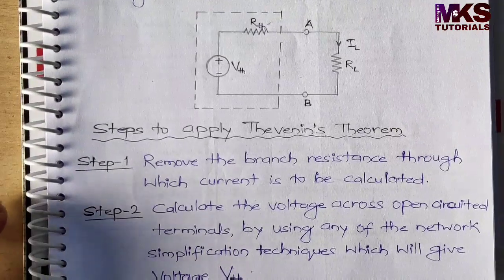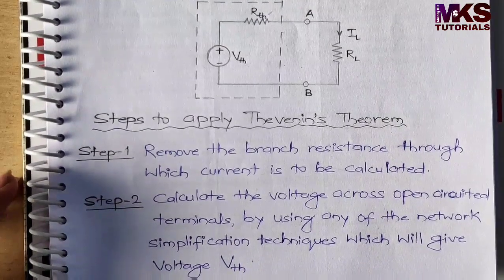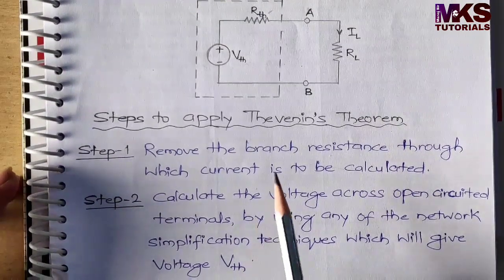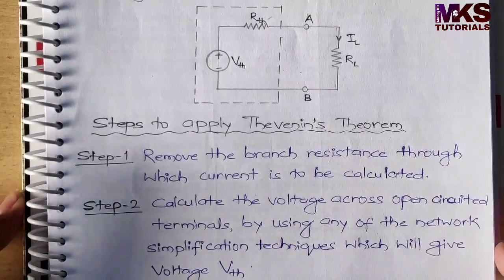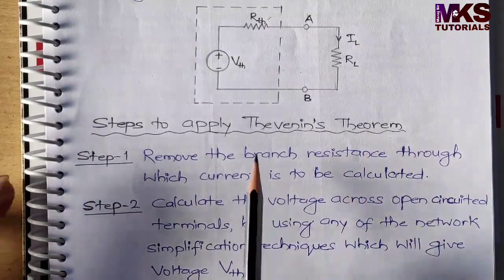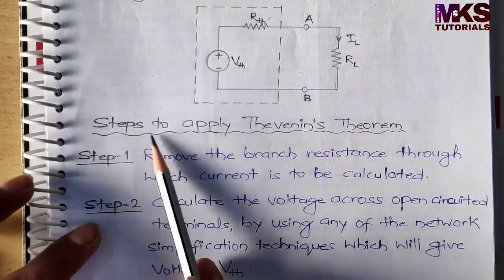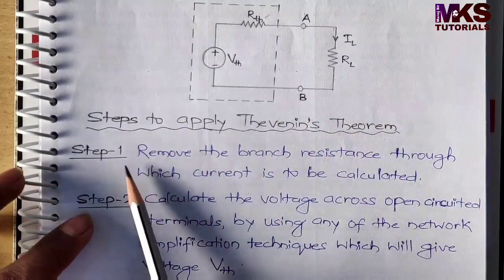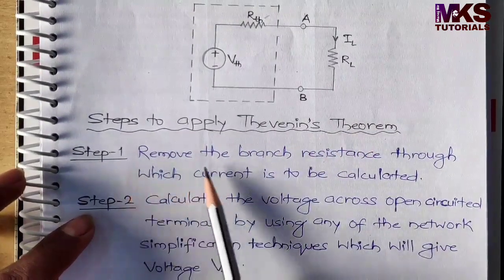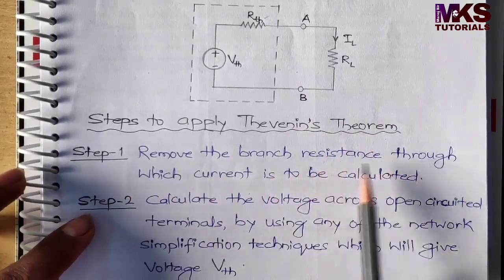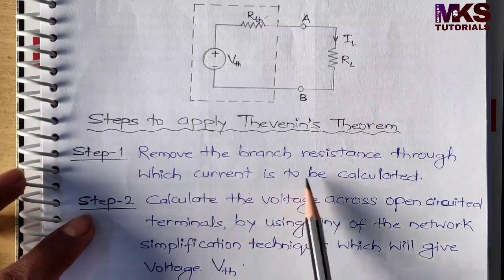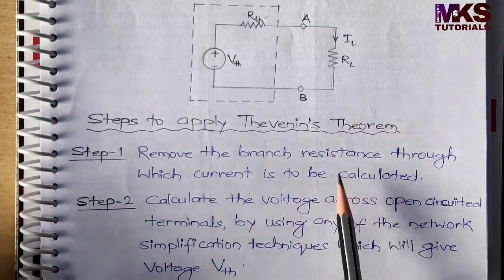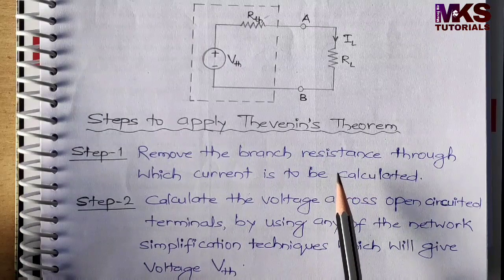इसको solve करने के steps देख लेते हैं। Steps to apply Thevenin's theorem: Step 1 — Remove the branch resistance through which current is to be calculated. हमको जिस branch के across current निकालना है उसको हम सबसे पहले हटा देंगे।